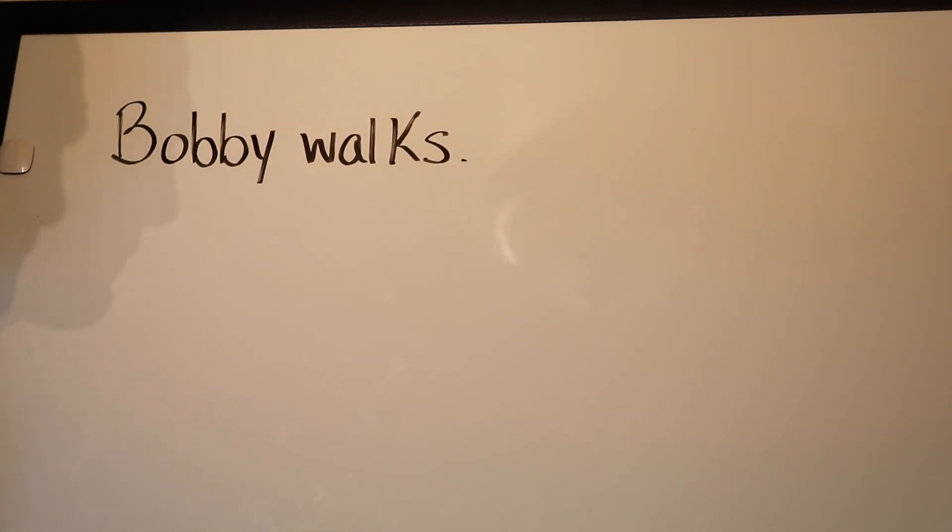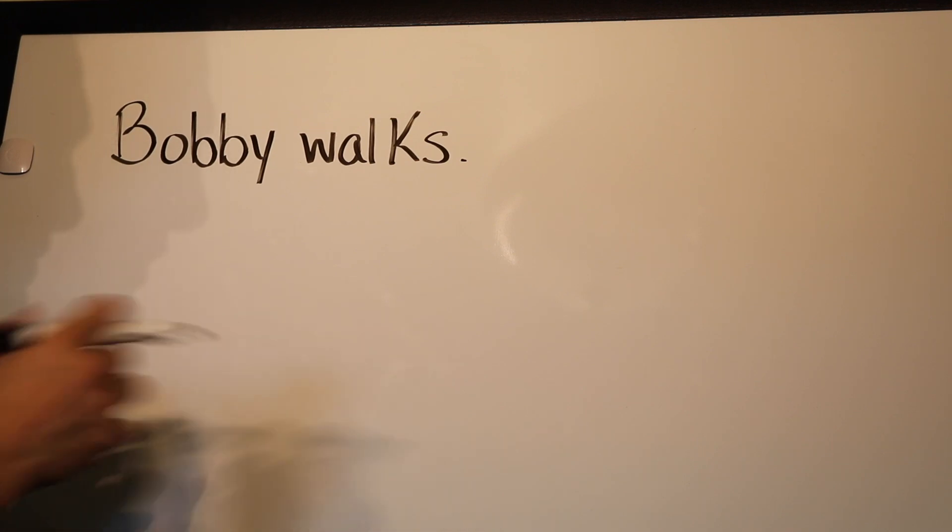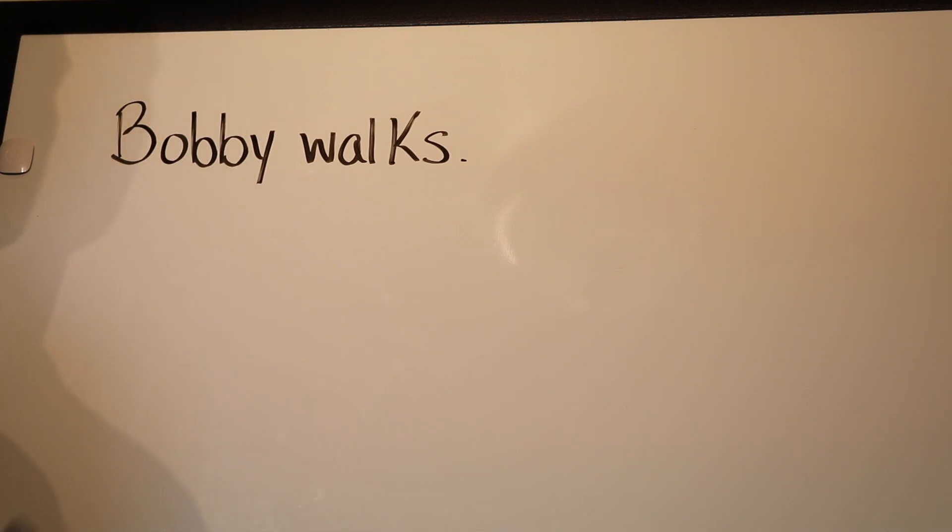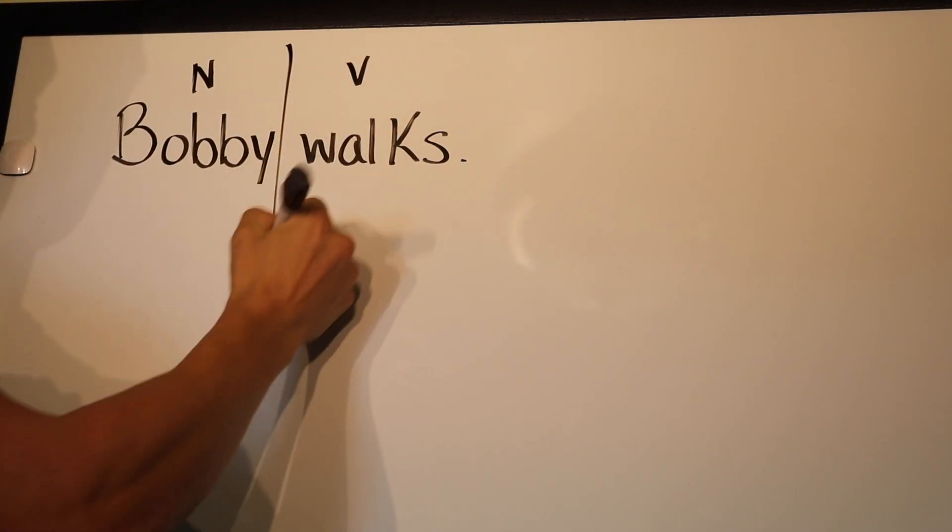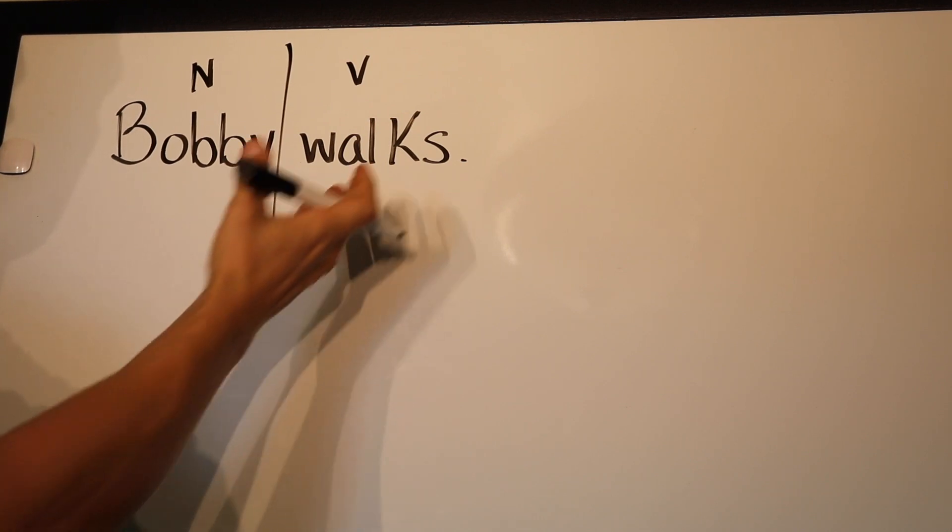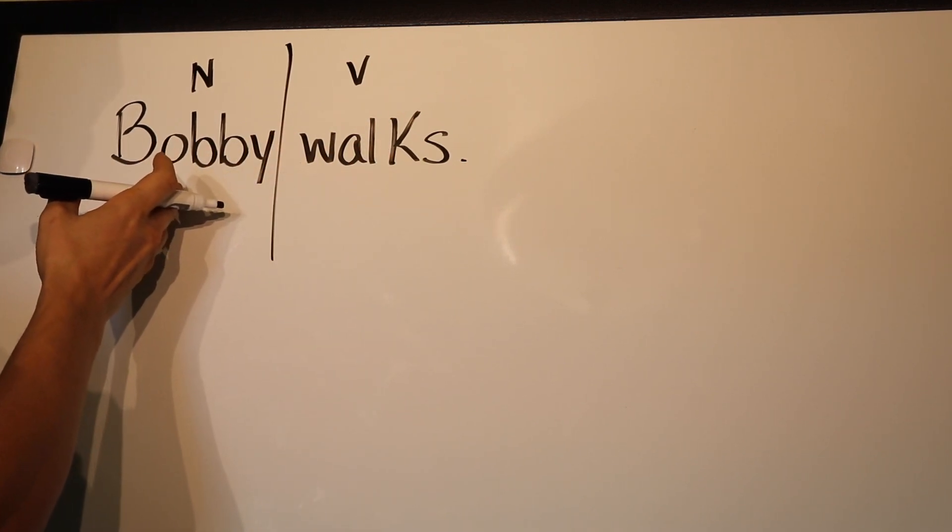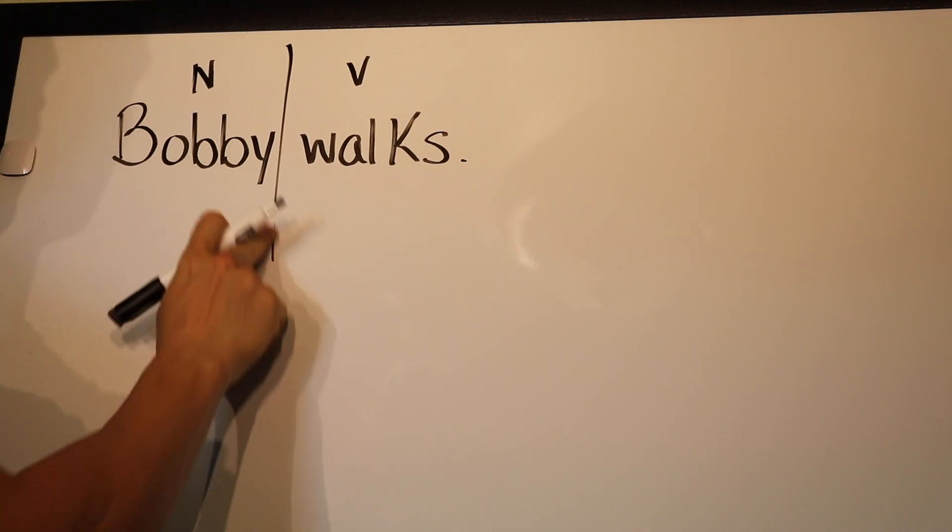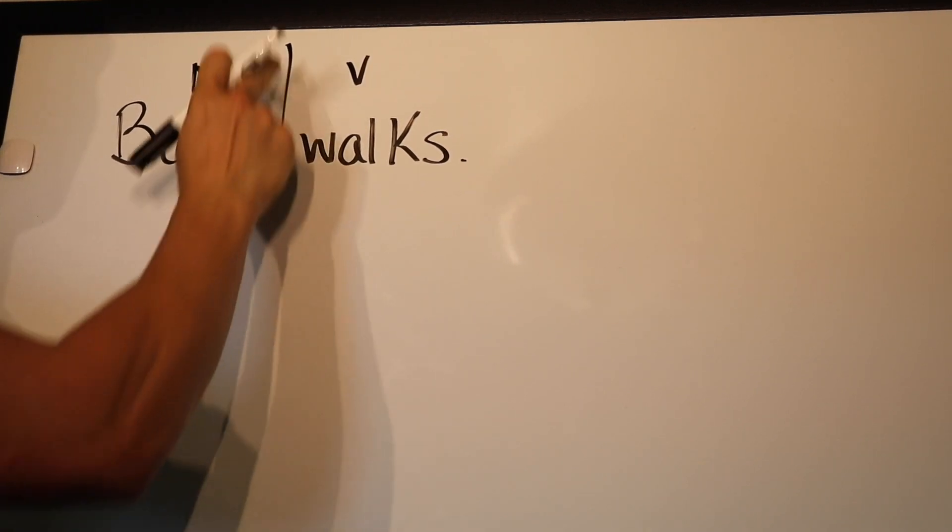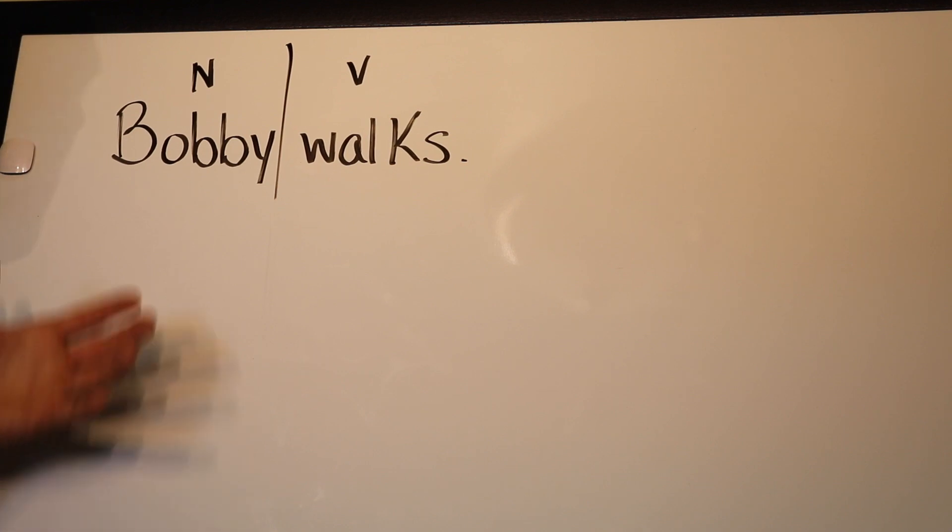Bobby walks. That is a bare bones sentence. It's very simple, very basic. Yes, it does have a noun, yes it does have a verb, so you have your predicate and your subject. Walks, predicate, your simple subject Bobby. But there's so much missing from this sentence that's really important. We're missing question words.